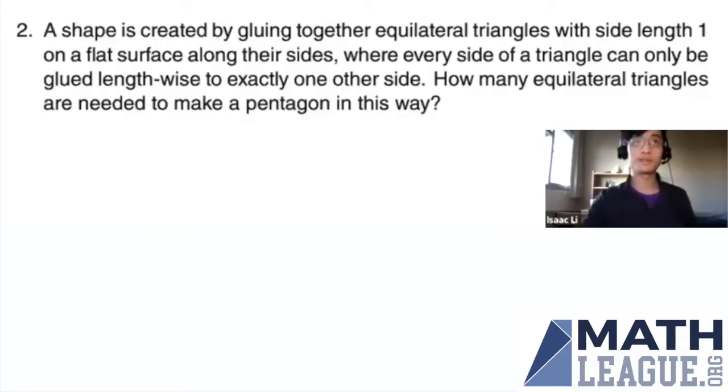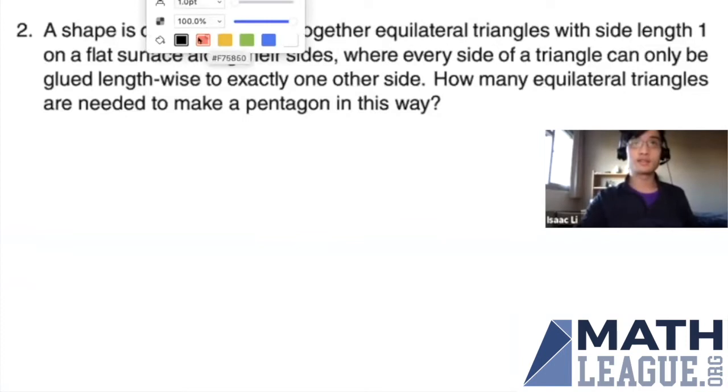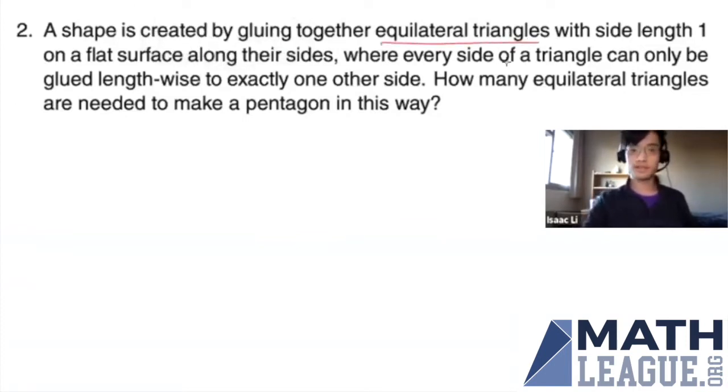So here is target two. So let's read it. A shape is created by gluing together equilateral triangles with side length one on a flat surface along their sides, where every side of a triangle can only be glued lengthwise to exactly one other side. How many equilateral triangles are needed to create a pentagon in this way?